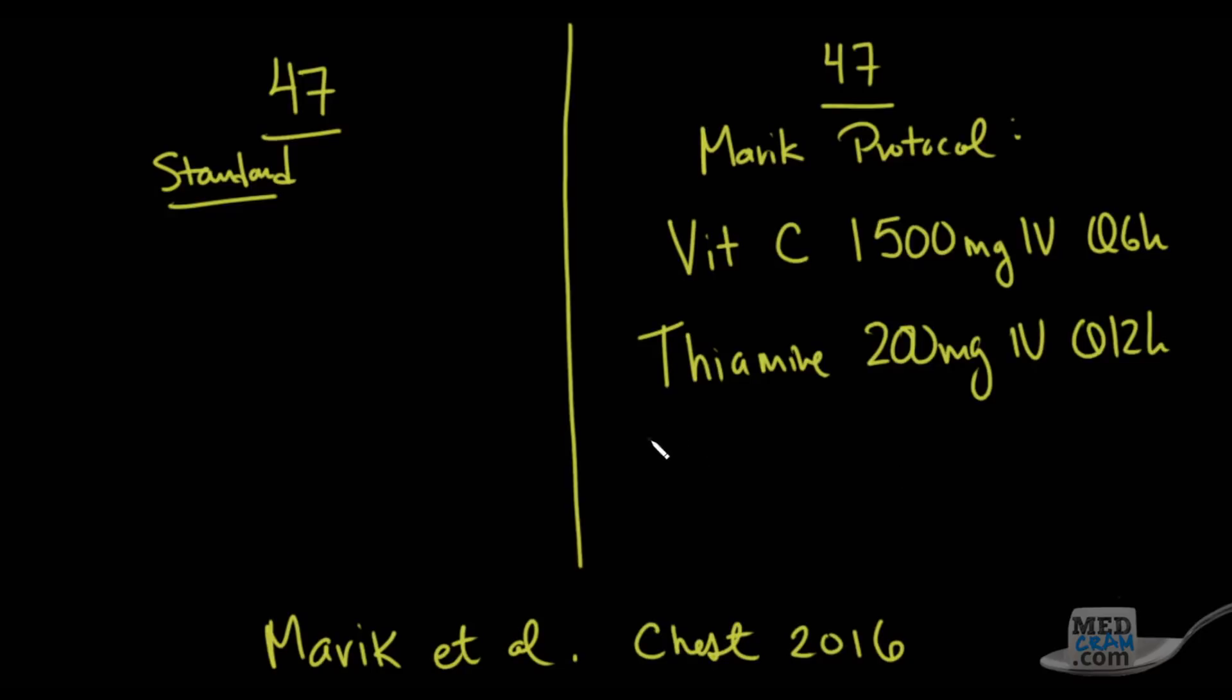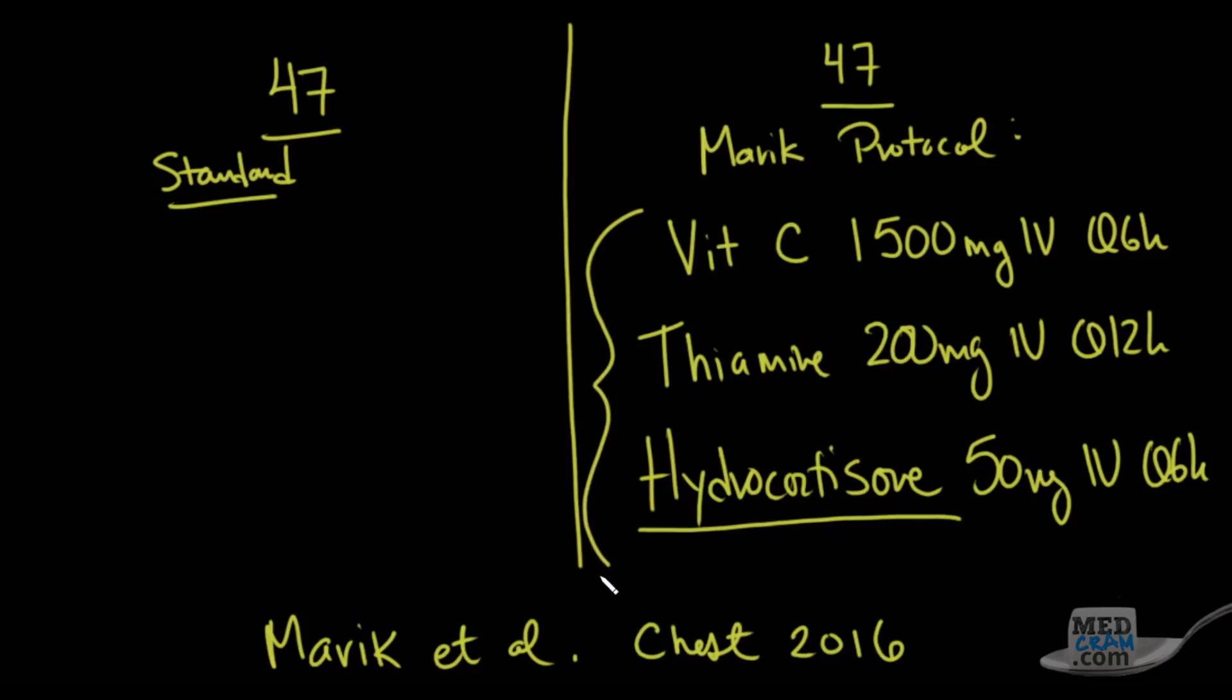The other one that they gave was hydrocortisone. 50 milligrams IV Q6 hours. And this was given up to seven days if they needed it. And then remember hydrocortisone is a steroid that closely resembles both the glucocorticoid and mineralocorticoid activity of the adrenal cortex. And so it was thought actually in early goal-directed therapy that giving hydrocortisone in patients who needed vasopressors was good. But there's been some studies that have shown that hydrocortisone by itself is maybe not completely everything that you need. And so these three together were what was done as opposed to just standard therapy. And these 47 patients here were consecutive and these 47 patients here were consecutive after this break. And so that's how the study was done. It was not a randomized placebo-controlled trial.